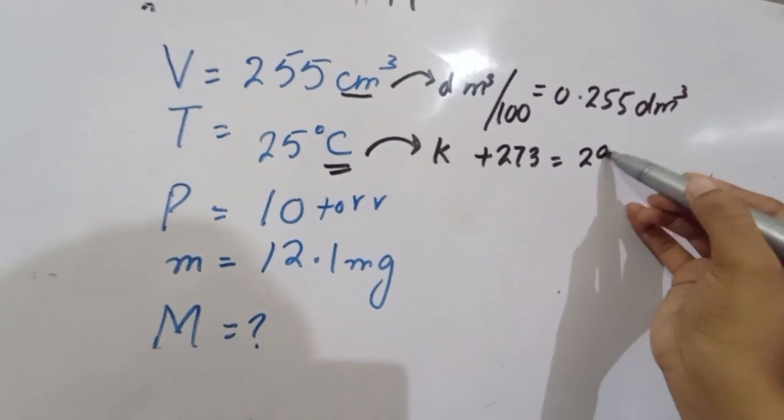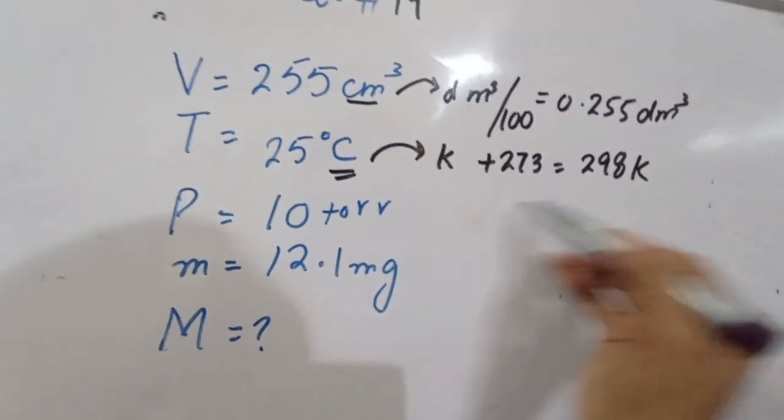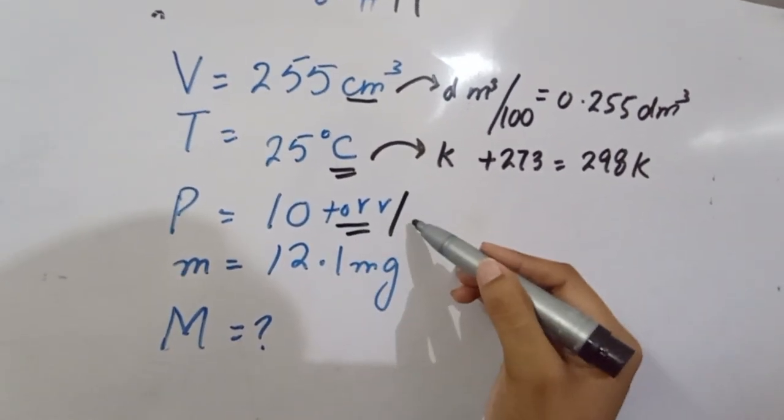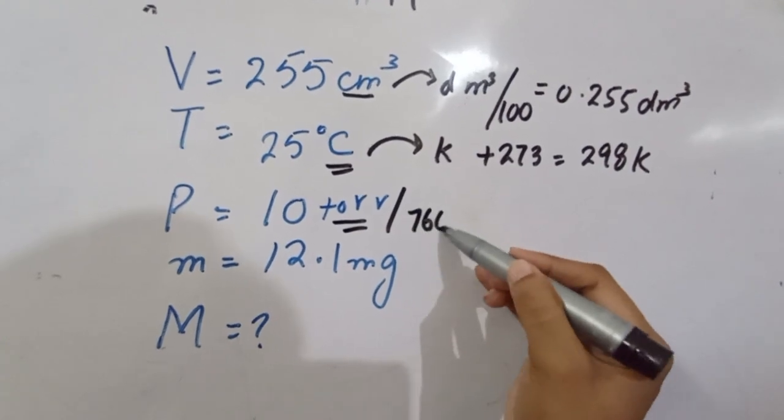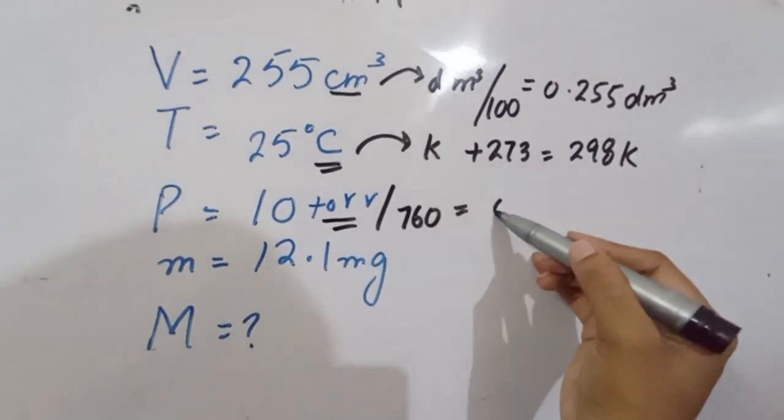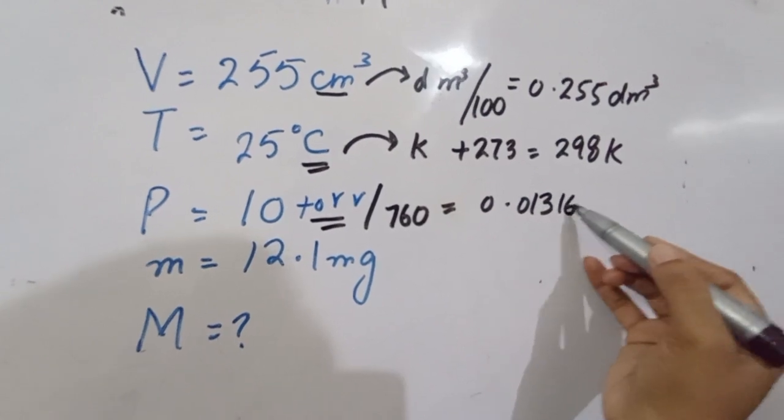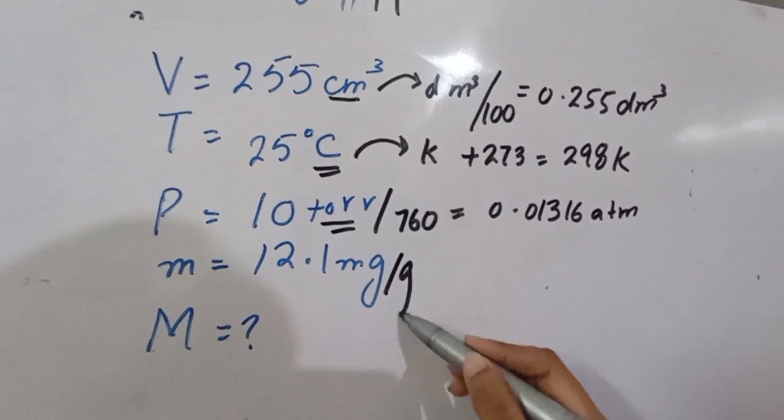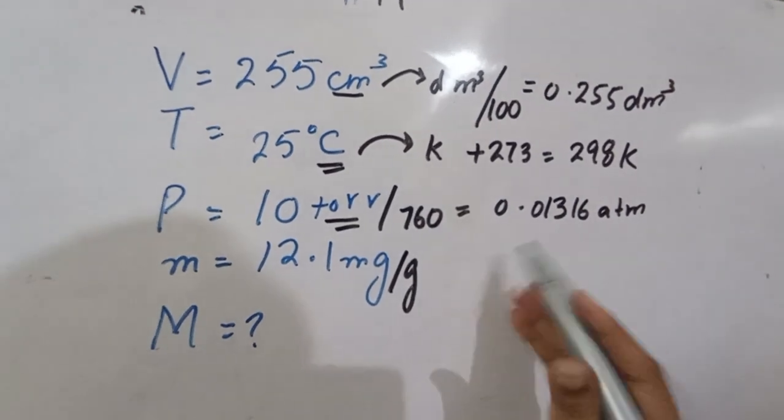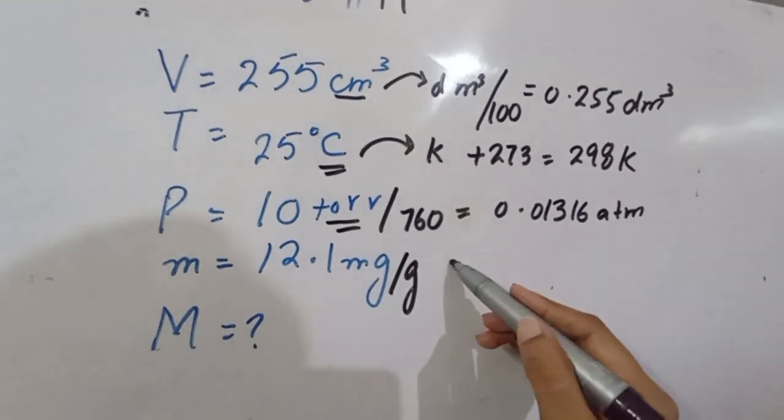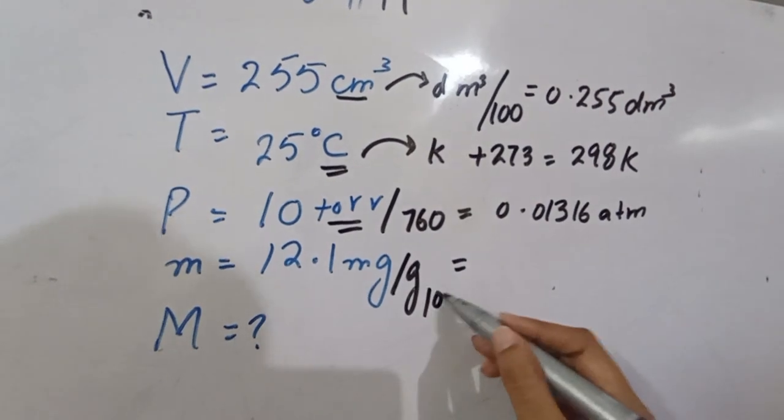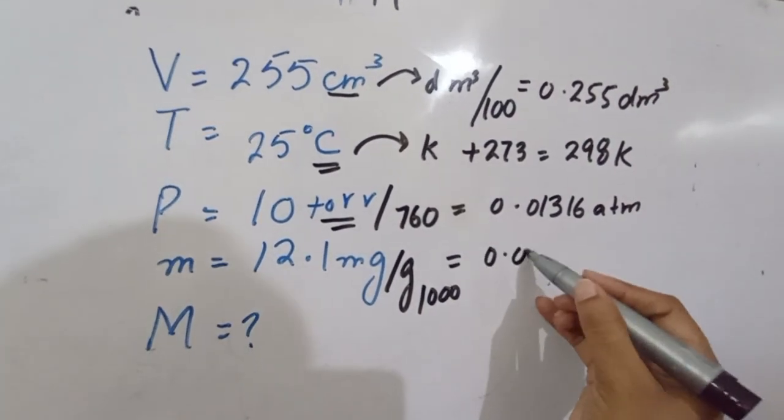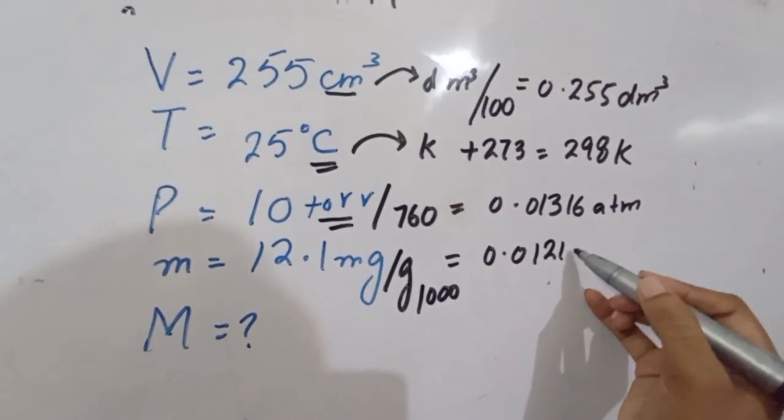Convert torr to atm by dividing by 760, giving 0.01316 atm. Convert milligrams to grams by dividing by 1000, giving 0.0121 gram.